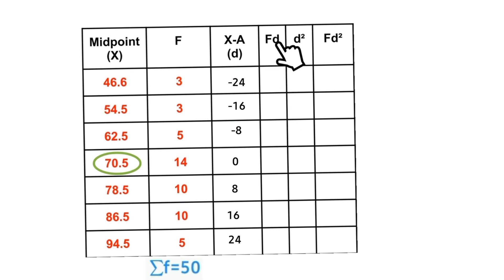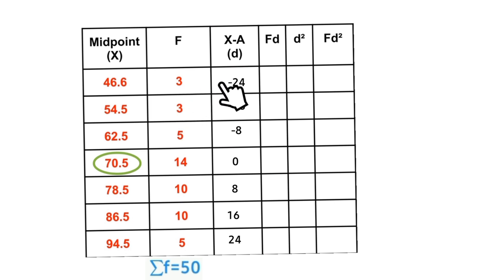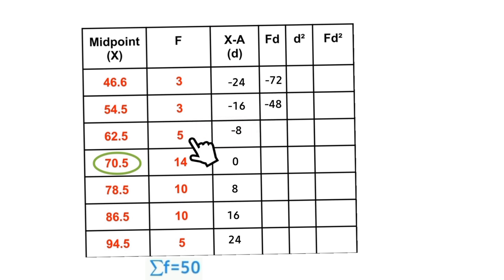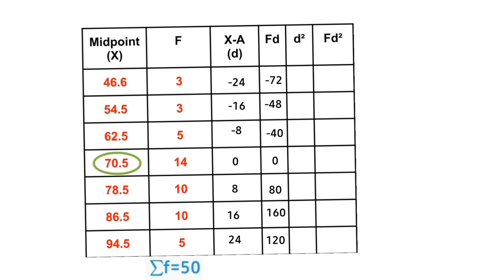The next column is fd, which simply means frequency times deviation from the mean. First row: 3 × (−24) = −72; next, 3 × (−16) = −48; 5 × (−8) = −40; 14 × 0 = 0. We apply the same rule to fill up the rest of the spaces.